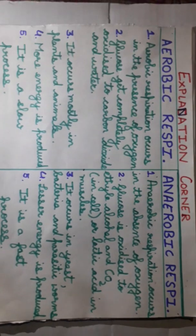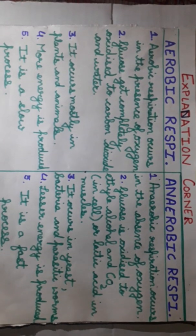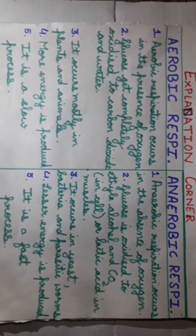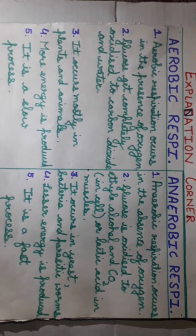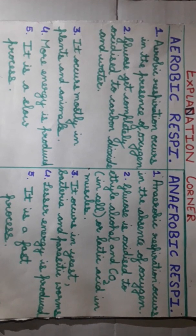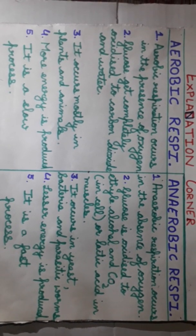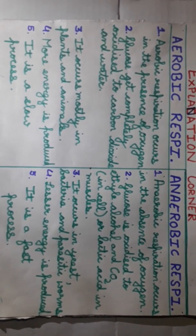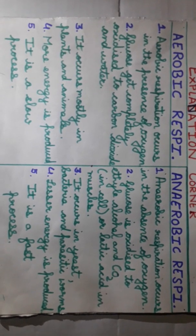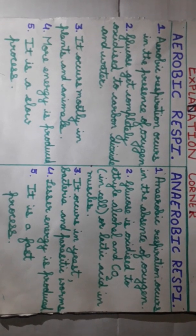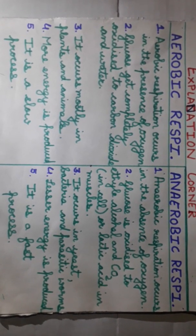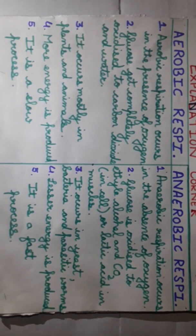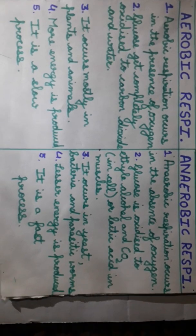Aerobic respiration mein jo glucose hai — yaani hamara jo food hai — woh poora digest hota hai, yaani oxidized ho jaata hai. Uske products hote hain carbon dioxide aur water, aur uske saath energy bhi produce hoti hai.